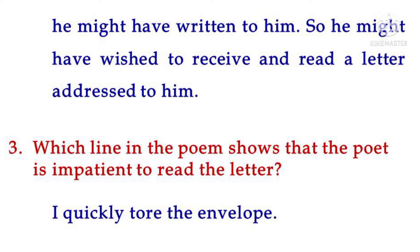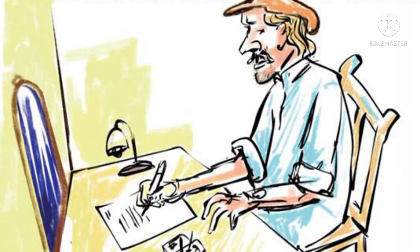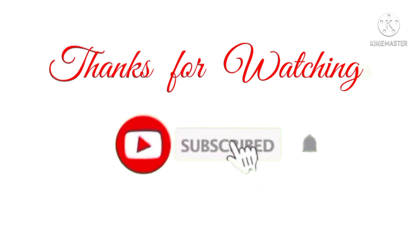Question 3: Which line in the poem shows that the poet is impatient to read the letter? Answer: I quickly tore the envelope. Question 4: Why could not the poet read his own letter? Answer: The poet couldn't read his own letter because he hadn't learned to read. I hope you understand the chapter. Thanks for watching. Thank you.